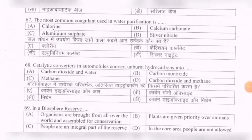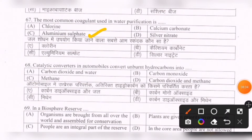Next question: The most common coagulant used in water purification is — options are: chlorine, calcium carbonate, aluminum sulfate, silver nitrate. The correct option is C — aluminum sulfate.